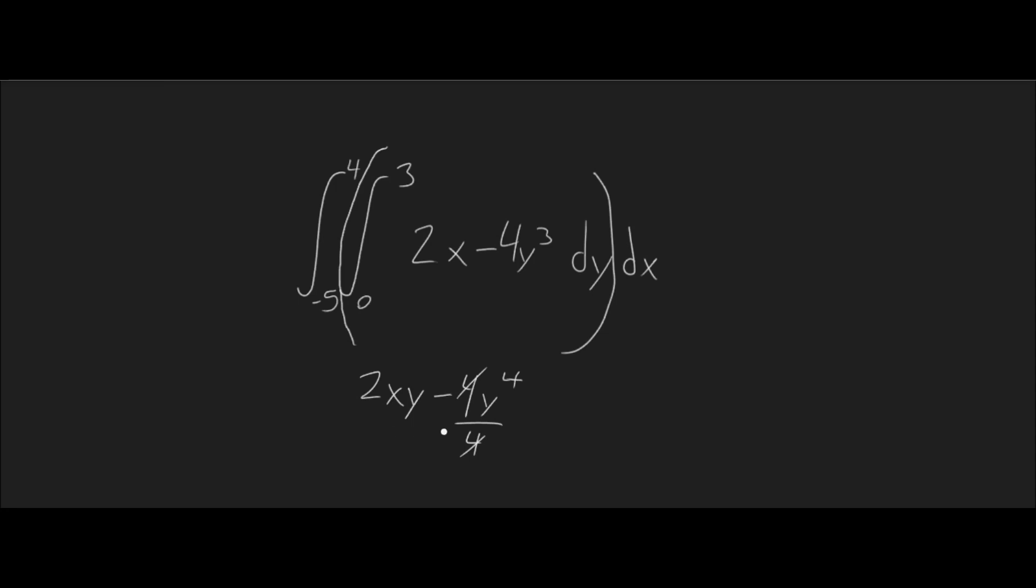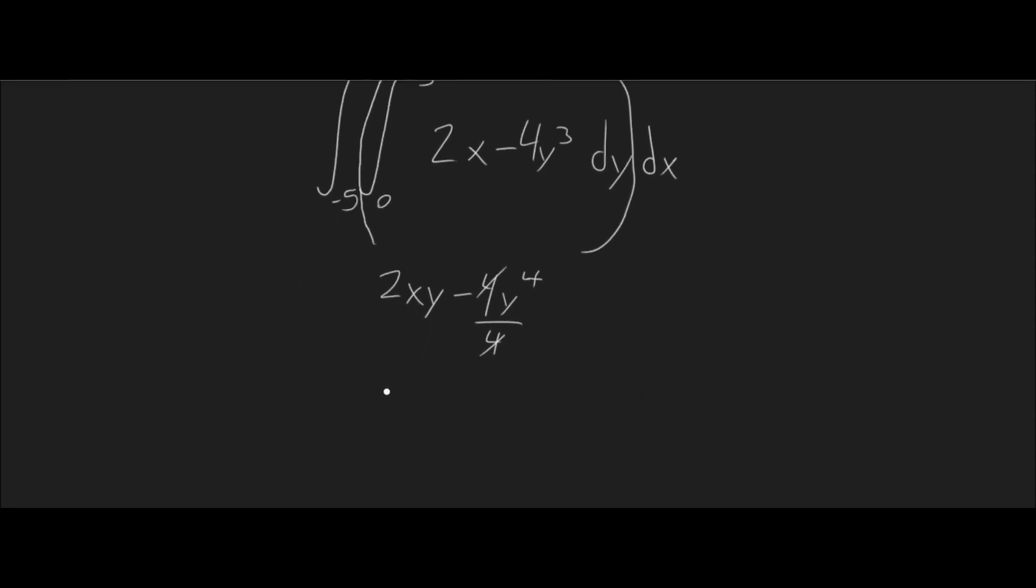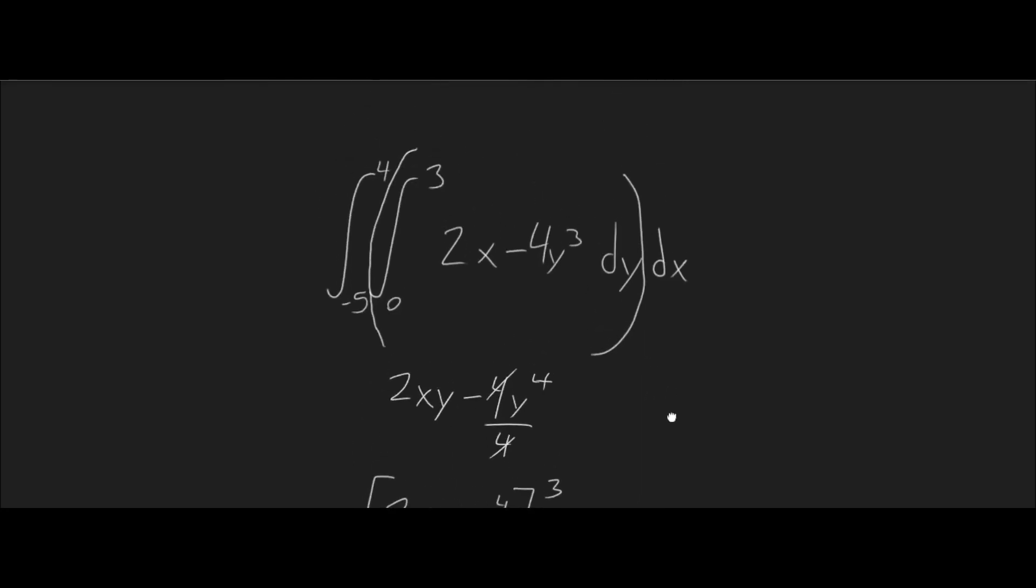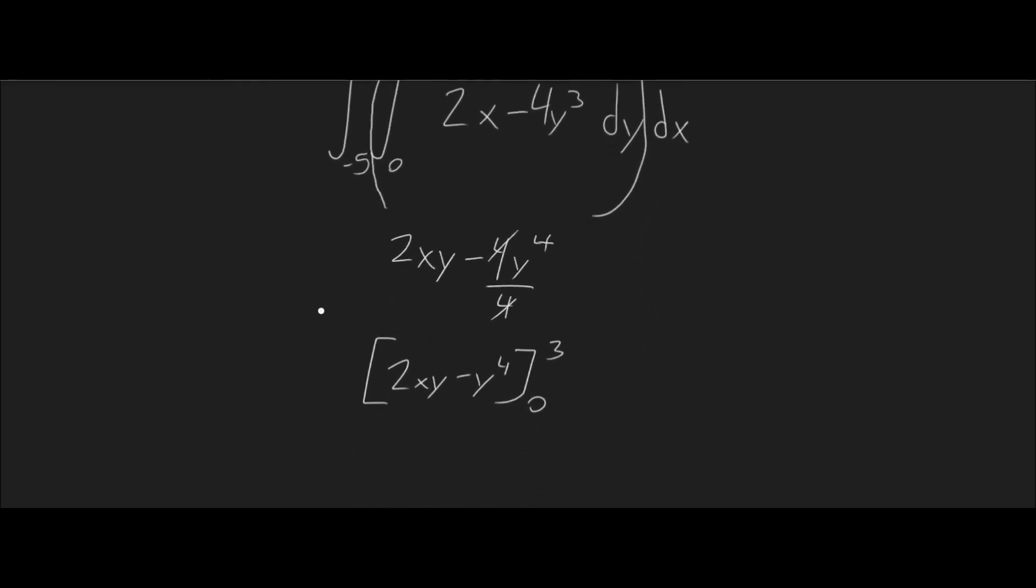And so, we're left with 2xy minus y to the power of 4. And we're evaluating this from 0 to 3. And remember that this outside integral is still here. So, we still have to write it. Minus 5 to 4 dx.